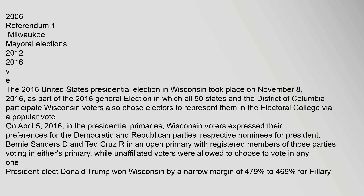The 2016 United States presidential election in Wisconsin took place on November 8, 2016, as part of the 2016 general election in which all 50 states and the District of Columbia participated. Wisconsin voters also chose electors to represent them in the Electoral College via a popular vote on April 5, 2016, in the presidential primaries.